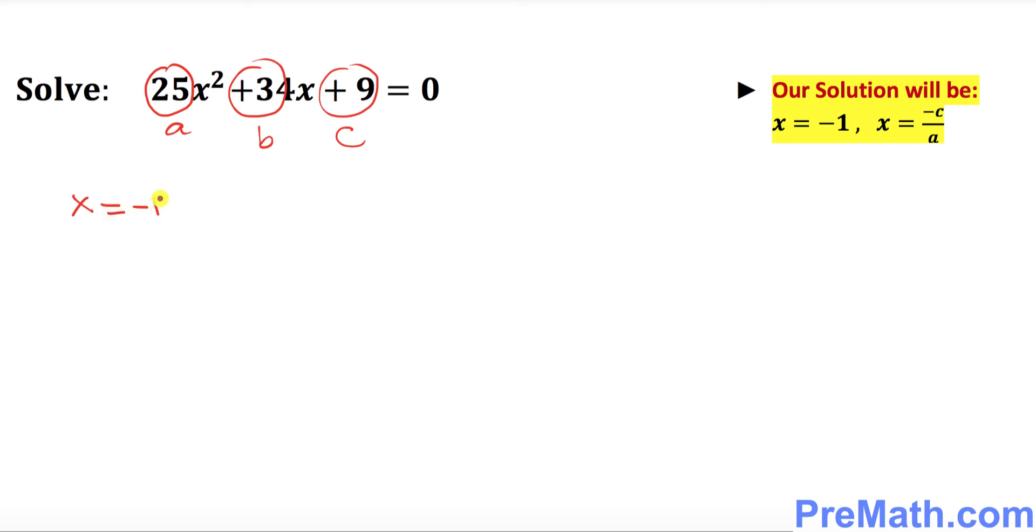Now in this case, one of our solutions is going to be negative 1 always, and the second solution is going to be negative c. So c is 9, which means negative c becomes negative 9 divided by 25. This is your other solution.